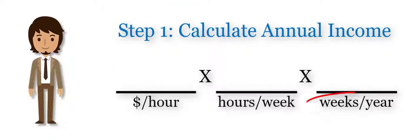Now multiply this by the number of weeks you are paid per year. There are 52 weeks in a year. If you are paid every week, you can use this number. If you don't get paid some weeks, like you have unpaid vacation, don't count those weeks.